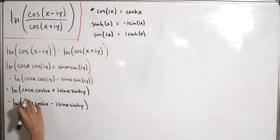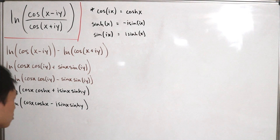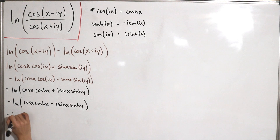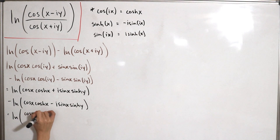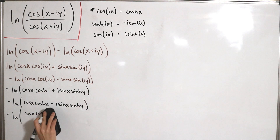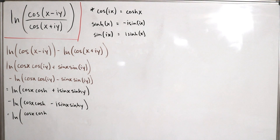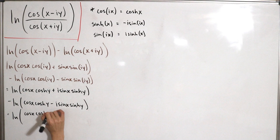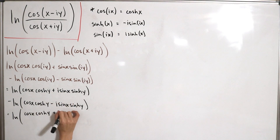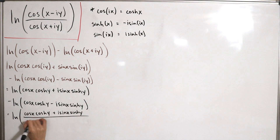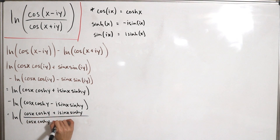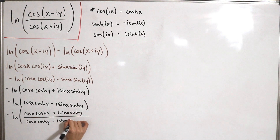We now recombine these back into a single natural log as a fraction. The numerator is cos(x)·cosh(y) plus i·sin(x)·sinh(y), and the denominator is cos(x)·cosh(y) minus i·sin(x)·sinh(y).